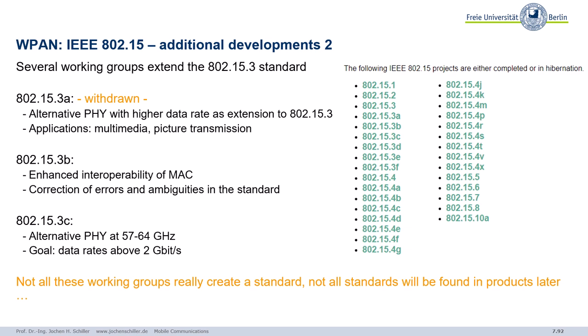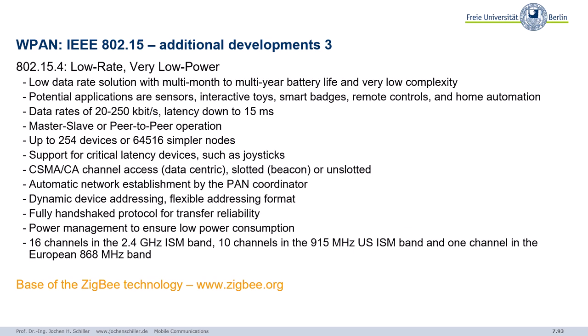An additional development to focus on is 802.15.4. If 802.15.1 was the beginning of Bluetooth, 802.15.4 was the idea of having even lower data rates and very very low power. The idea was: can we have something with multi-year battery life and very low complexity? The focus was not on cable replacement like headsets or keyboards, but more on sensors, toys with very low latency, remote controllers, home automation — 100–200 kilobit per second, low latency.